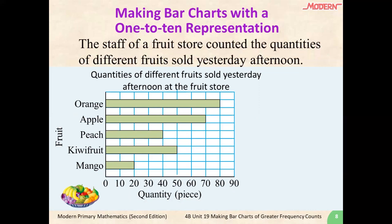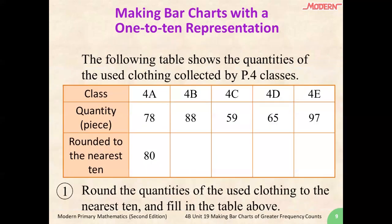Now, let's work on another example together. Let's see if you can round the numbers to the nearest tens place. The following table contains quantities of used clothing collected by P4 classes. Can you help me round the numbers to the nearest tens place and make the bar chart together? For 88, we will look at the units place, which is an 8, which is larger than 5, therefore we will have to round it up to 90.